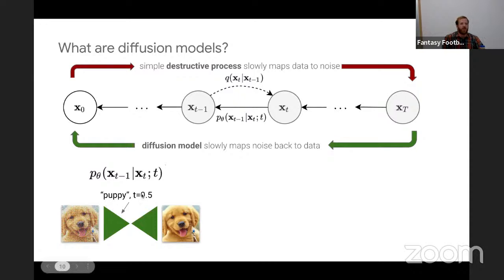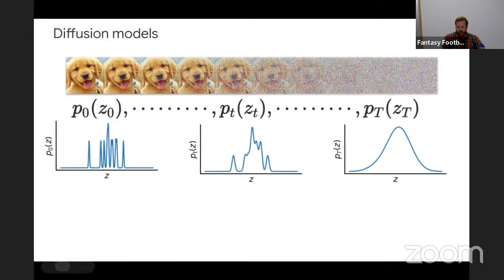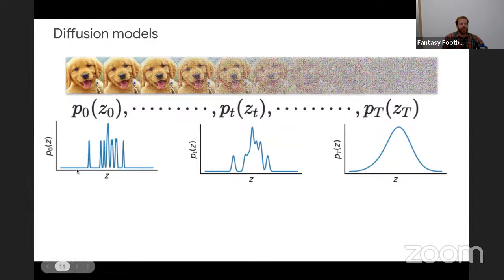For text-to-image generation, we condition on text. For all diffusion models, you also condition on the amount of noise — so you know not just that there is a noisy image, but how much noise was added. The goal of this U-Net is to denoise the image — to predict what the clean image was before noise was added. Another perspective from the score-based generative modeling literature: we're learning a sequence of distributions, from the clean distribution of images on the left to a Gaussian noise distribution.